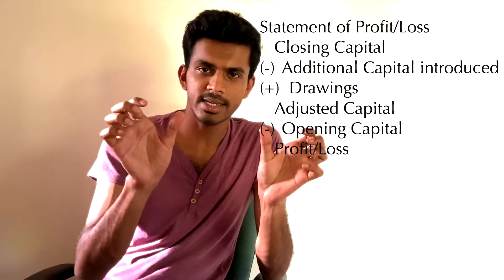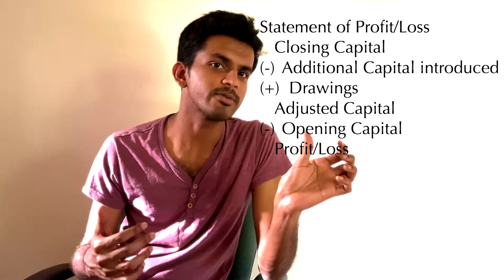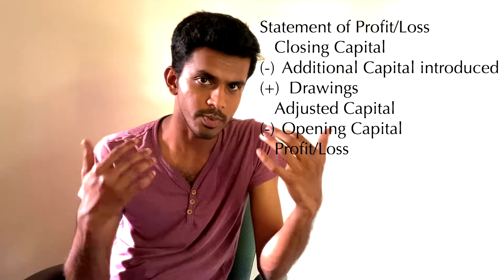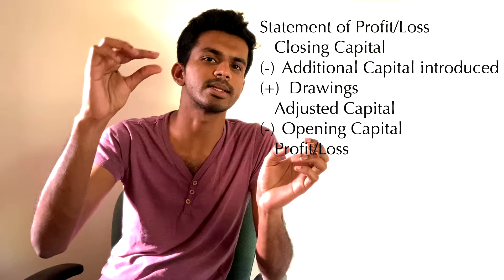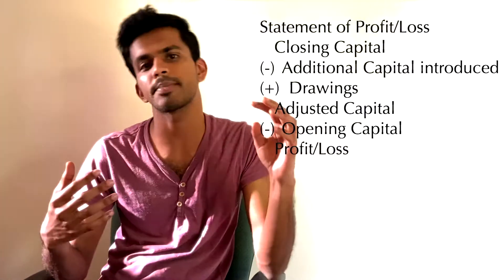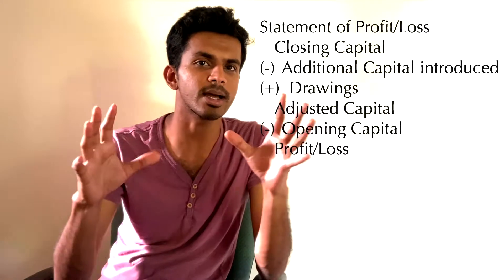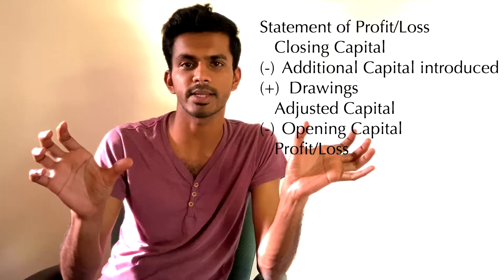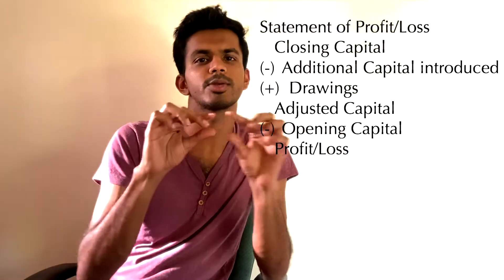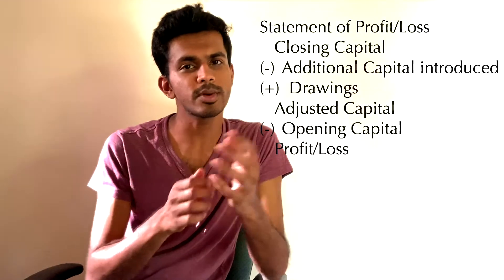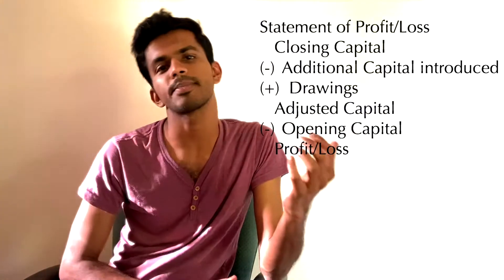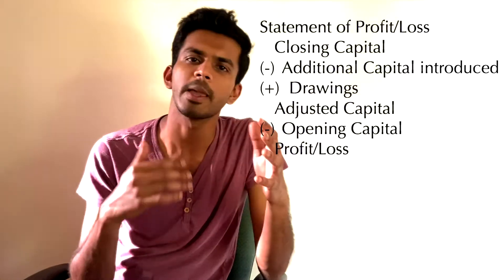We then prepare the statement of profit and loss. We start with the closing capital, then add additional capital introduced, then subtract drawings — including personal usage by the owner. Adding back drawings gives us the adjusted capital. Comparing the adjusted capital with the opening capital gives us the final figure: a positive figure is a profit, a negative figure is a loss.